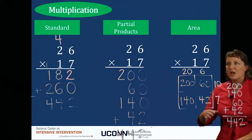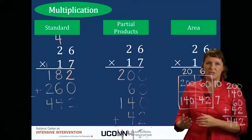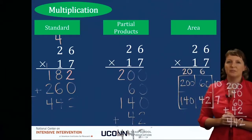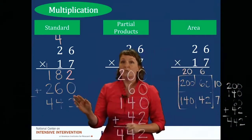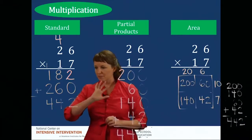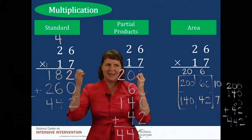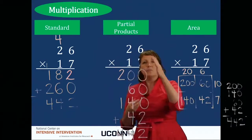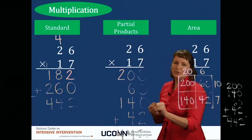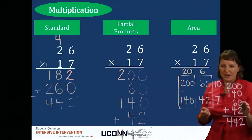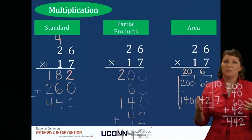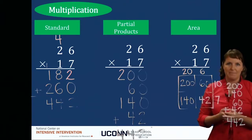Just as with addition and subtraction, there are multiple ways of thinking about multiplication. For students who've worked on the standard algorithm for several years and it's still not making sense, you might want to rely on the partial products model or the area model to help make multi-digit computation much easier for them.